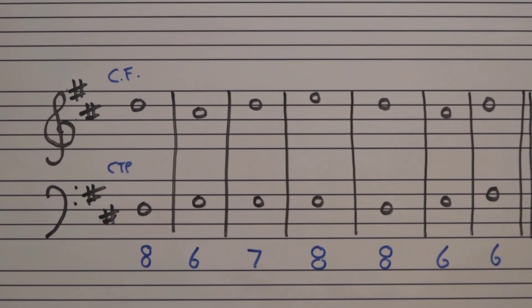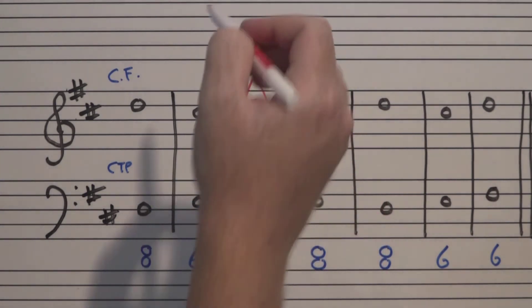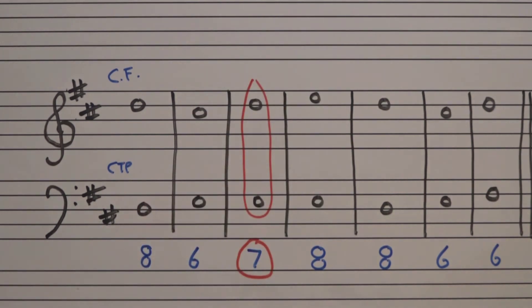So those numbers really do tell you a lot. Because notice at the top of that second page, identify the intervals in each measure and circle any inappropriately used intervals, including seconds, fourths, and sevenths. So that is a note you should not use right there.